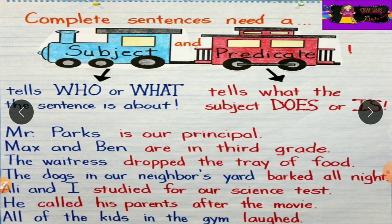Next sentence: 'Ali and I studied for our science test.' Whom we are talking about? Ali and I — they are the subject. What are we talking about them? 'Studied for our science test' — that is the predicate. Next: 'He called his parents after the movie.' Here 'he' is the subject and the rest of the sentence is the predicate.